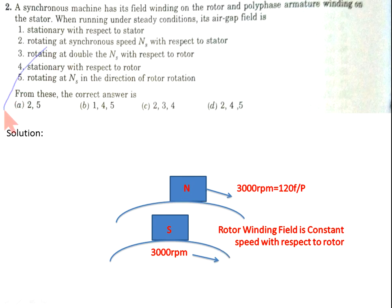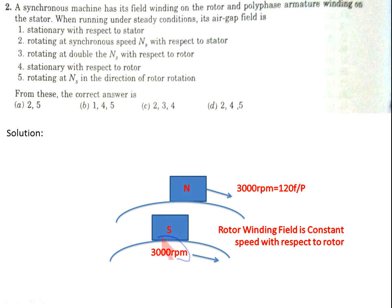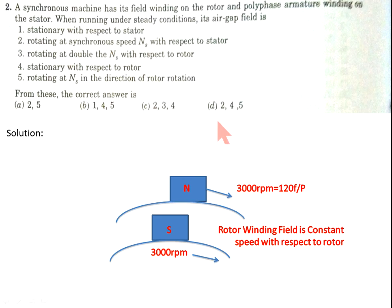Statement 4 is correct and statement 3 is not correct. Statement 5: air gap field rotating at NS in the direction of rotation — the direction of rotation and the rotating magnetic field are both in the same direction at NS speed, so statement 5 is also correct. Therefore statements 2, 4, and 5 are correct, and option D is the correct answer.